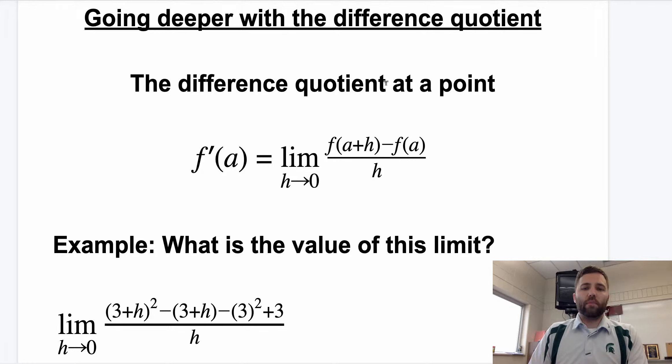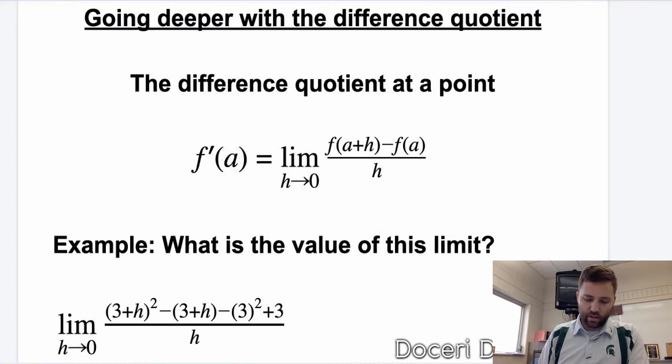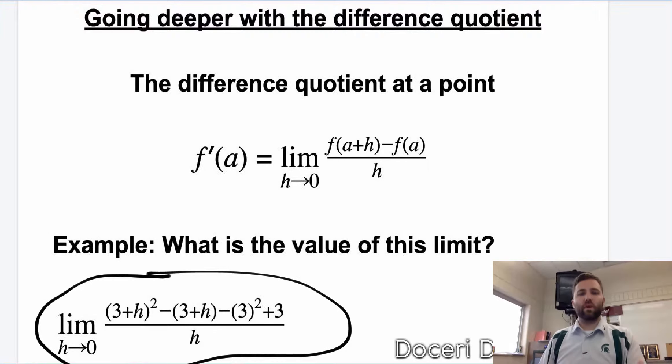The problem that gets asked is something like this, where you have the limit as h approaches 0 of a fairly ugly expression. One way to approach this is to try and expand everything and simplify and hope that an h cancels out so that you can solve the limit.